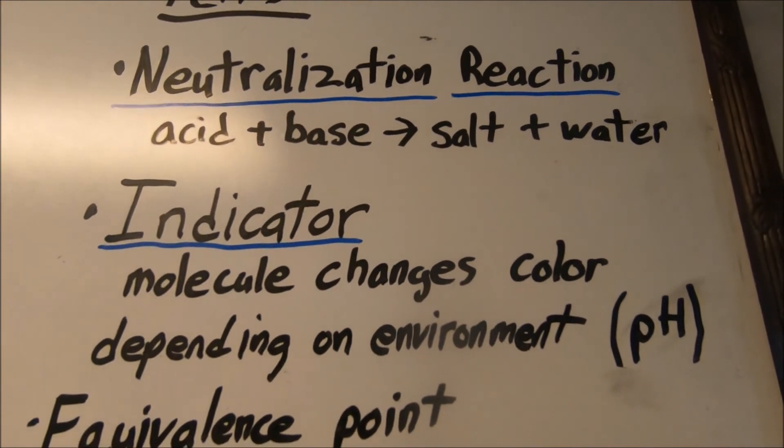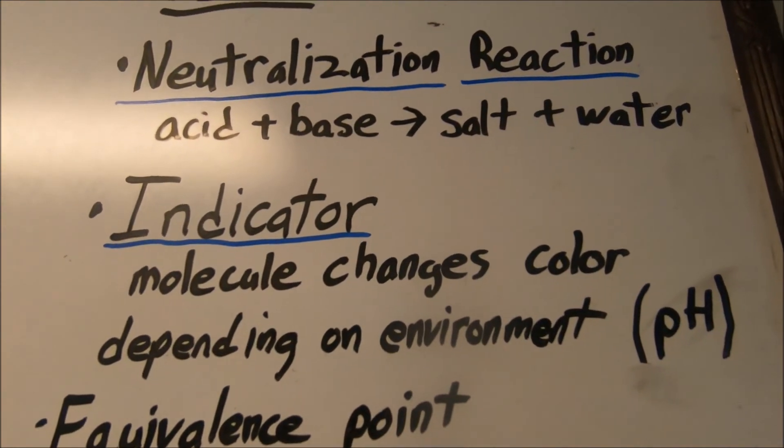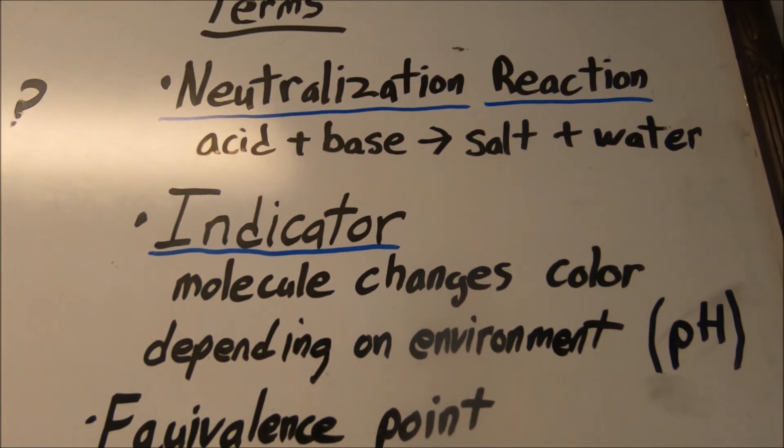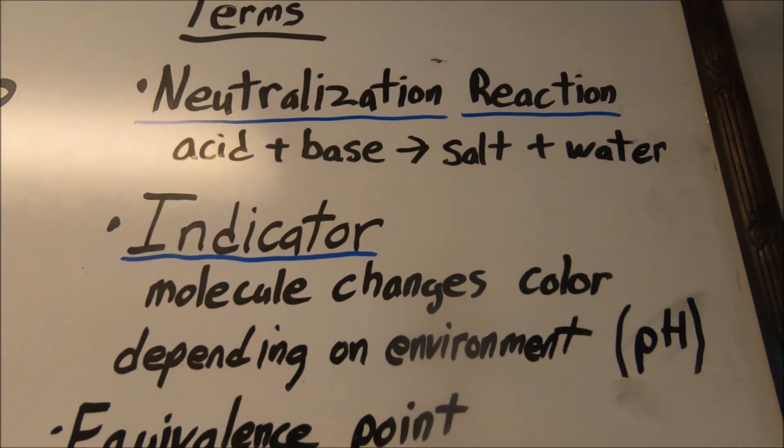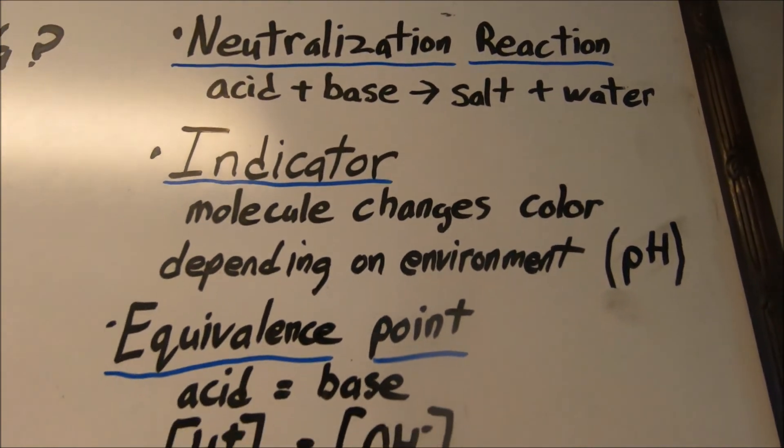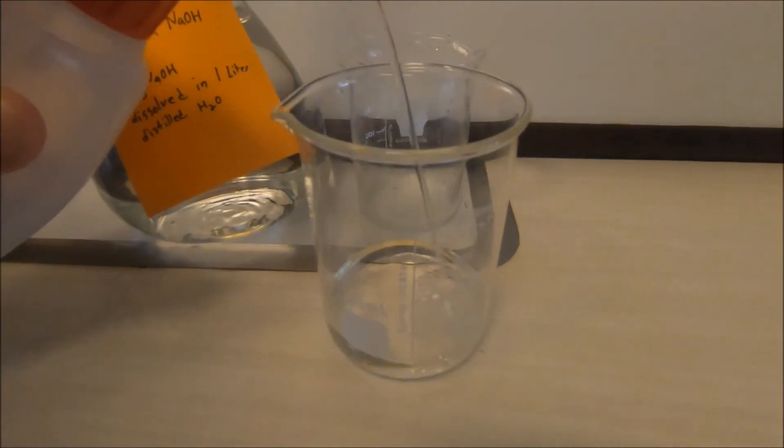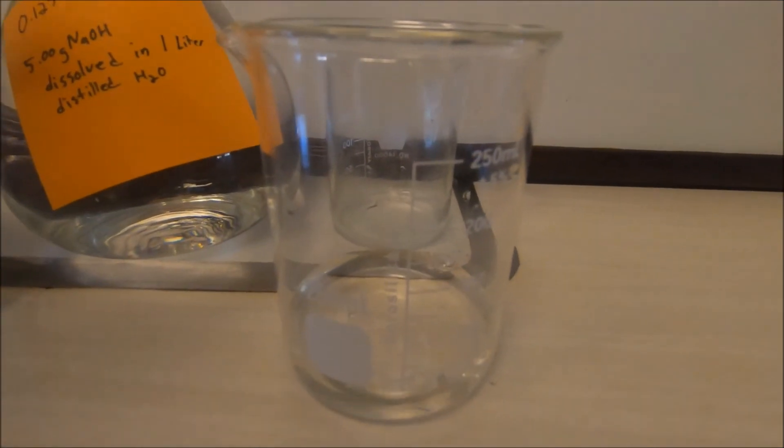We're going to be using an indicator to determine the amount of pH or the changes color depending on the pH, and use that indicator to find out when we've neutralized that acid and base. Our indicator we're going to be using today is phenolphthalein. If we were to put it in some water, so we get some distilled water...